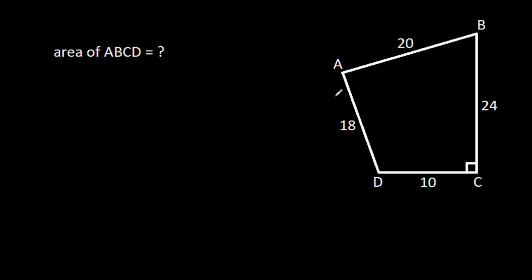In this video, we have been given that AB is 20, BC is 24, CD is 10, AD is 18, and angle BCD is 90 degrees. We have to find the area of ABCD.